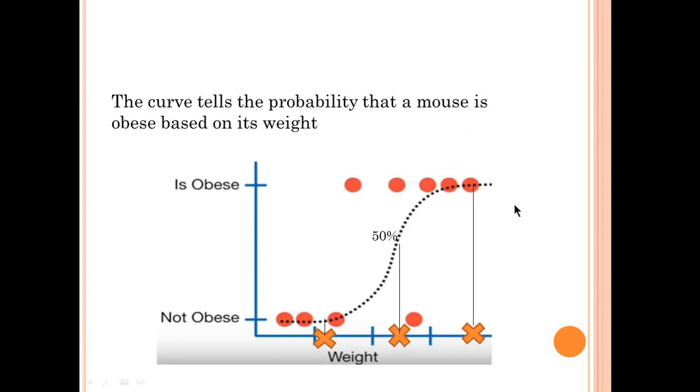If we weighed a very heavy mouse, there is a high probability that the mouse is obese. If we weighed an intermediate mouse, then there is a 50% chance that the mouse is obese or not obese. Lastly, there is a small probability that a light mouse is obese.